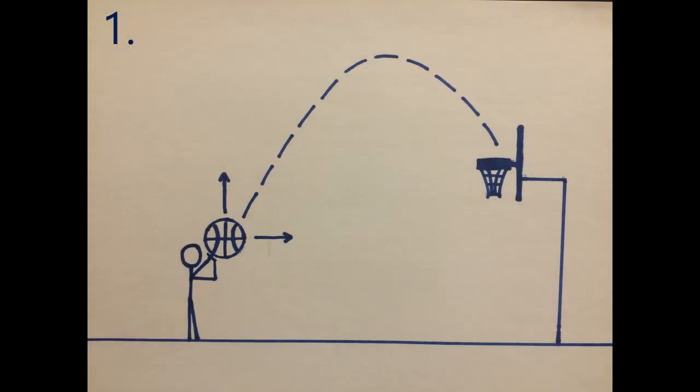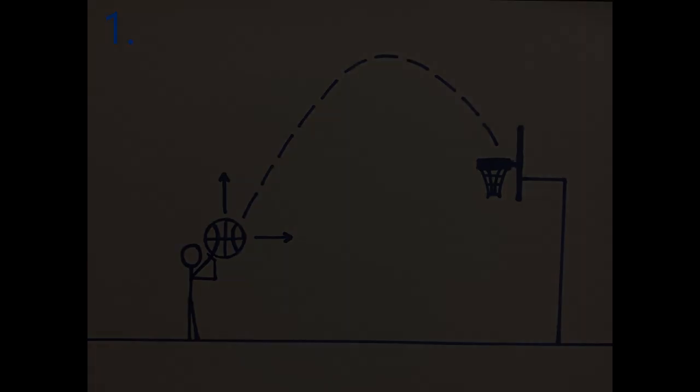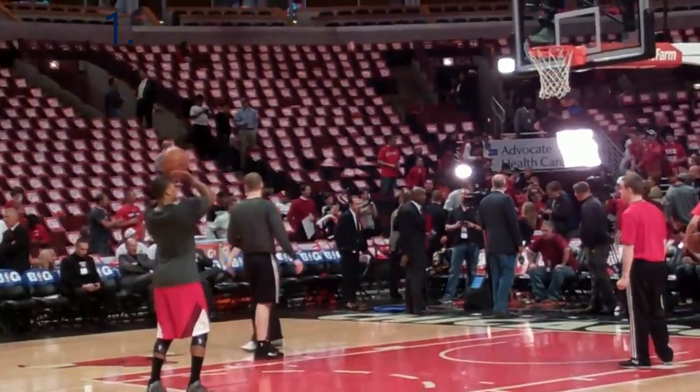This is scenario 1. As you can see, I'm standing completely flat-footed. This means that any force that I generate will come from just my arm. Therefore, my arm must produce 10 newtons of vertical force and 10 newtons of horizontal force for the ball to go through the hoop. This is how people shoot free throws because you can't jump.